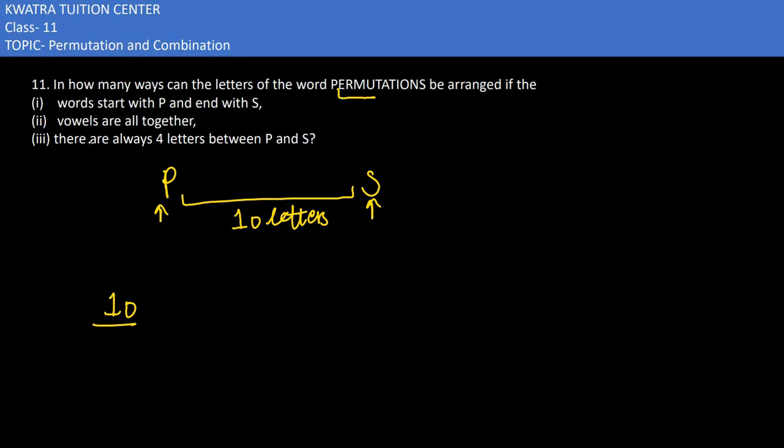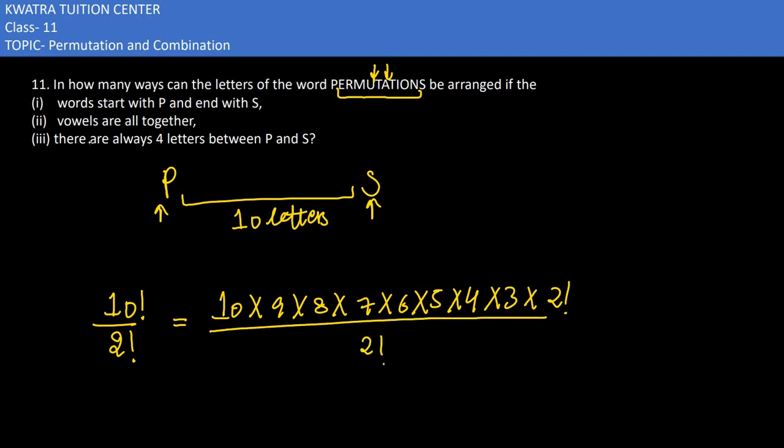It is T and T. So if T and T are repeated, then what will happen? 2 factorial. Above you have 10 factorial and below 2 factorial. How do you simplify? 10 into 9 into 8 into 7 into 6 into 5 into 4 into 3, and 2 factorial in the end. What will happen in the denominator? 2 factorial and 2 factorial cancel.